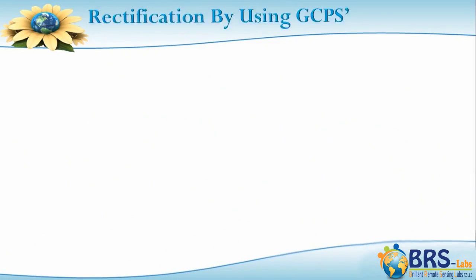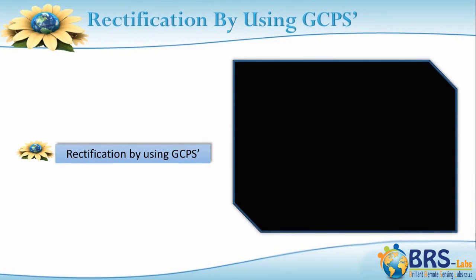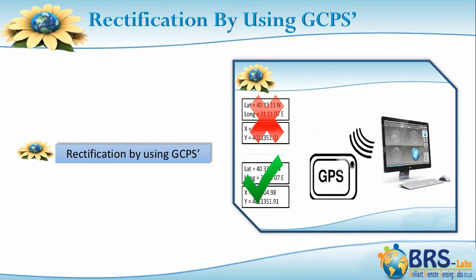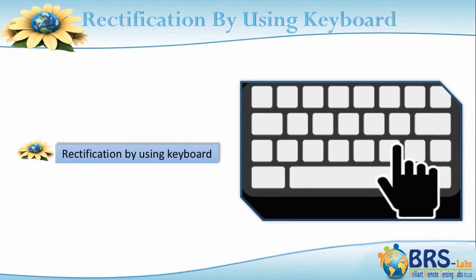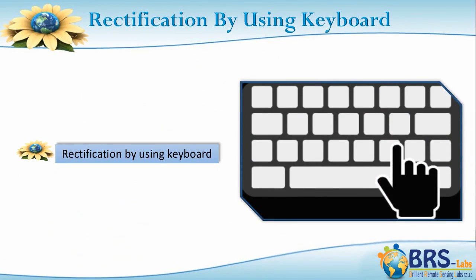Third, the Rectification by using ground control points lecture. We will discuss another step of geographic correction using a file that includes coordinates of ground control points. Fourth, the Rectification by using keyboard lecture. We will discuss another step of geographic correction through manual insertion of coordinates using the keyboard.